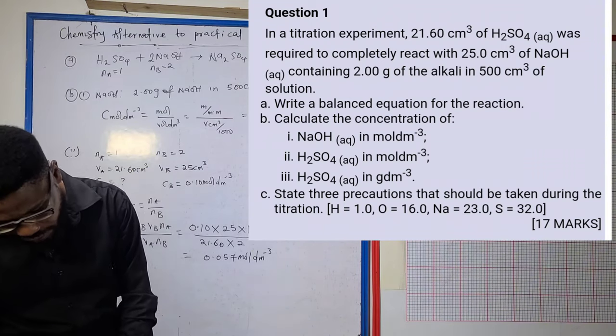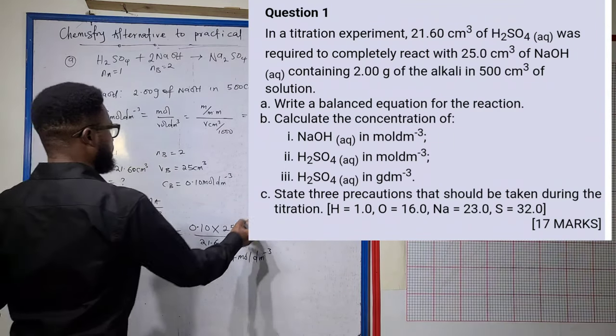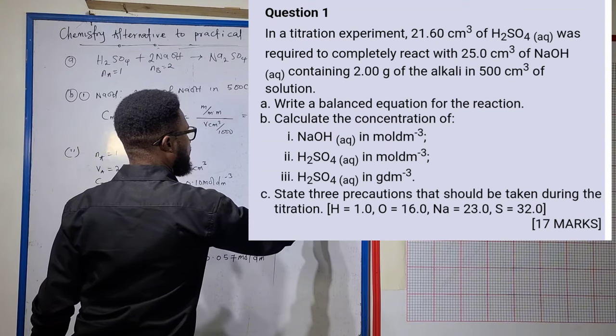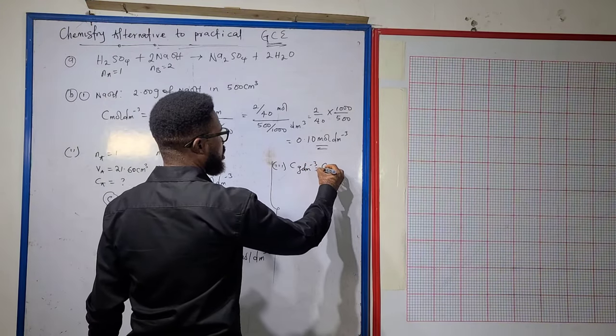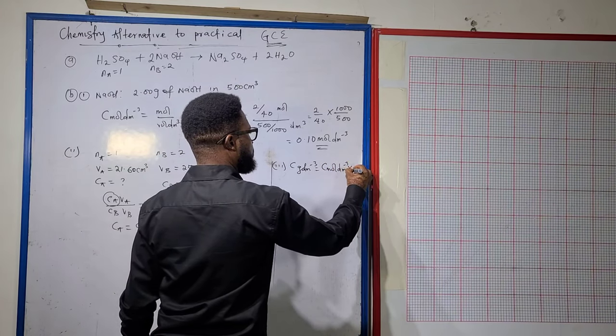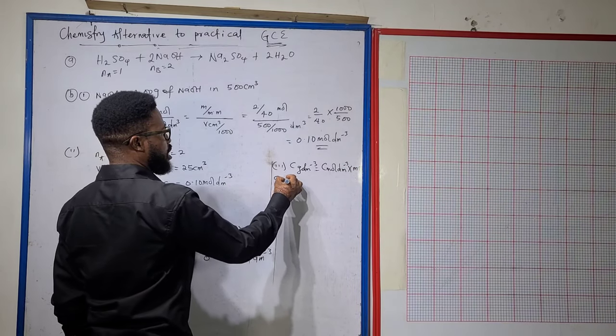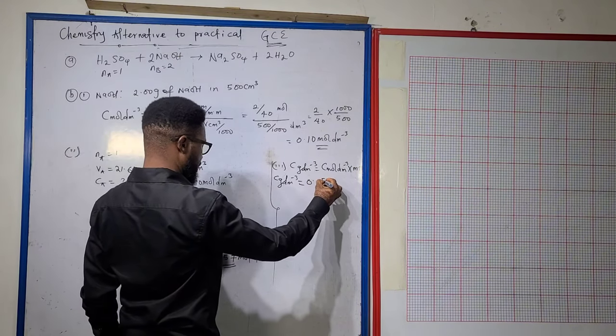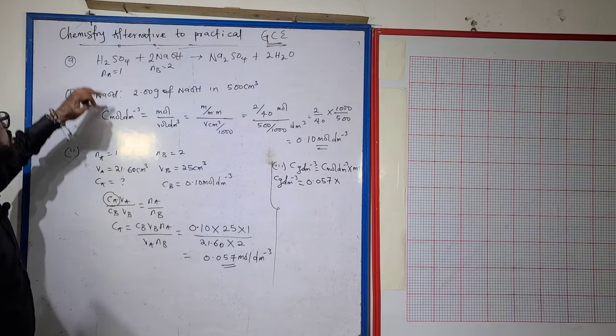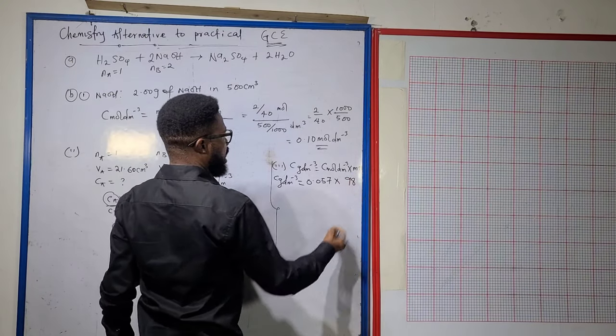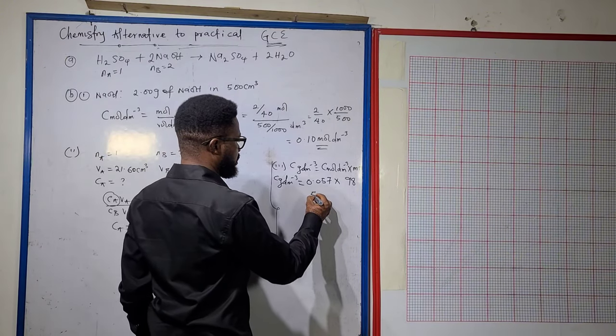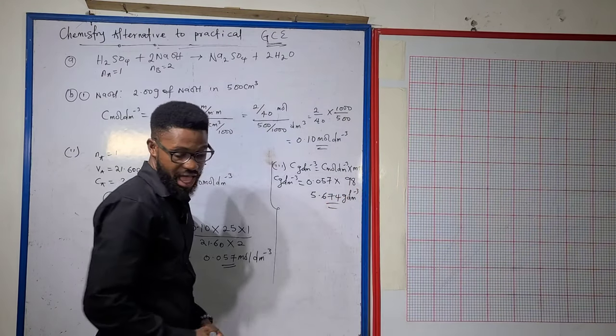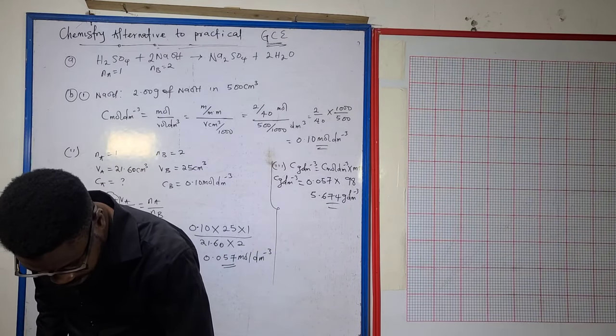For b3, I was told to look for the concentration of the acid in grams per dm³. Concentration in grams per dm³ is concentration in moles per dm³ times molar mass. That's 0.057 times the molar mass of H₂SO₄, which is 98 grams. This gives me 5.674 grams per dm³.